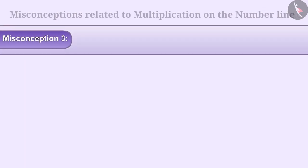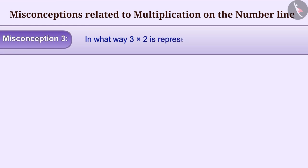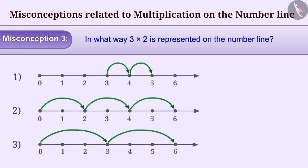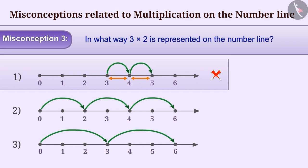Misconception 3: In what way is 3 multiplied by 2 represented on the number line? While representing the multiplication of whole numbers on the number line, counting is often done starting from the first number 3, and 2 steps of unit distance each are taken towards the right. This is a misunderstanding. To multiply 2 numbers on the number line, one should start with 0. The first number tells us how many steps to take, and the second number tells us the distance for each step.